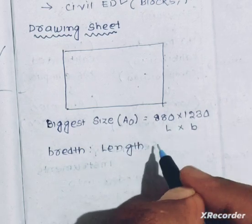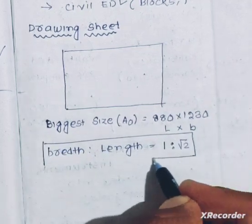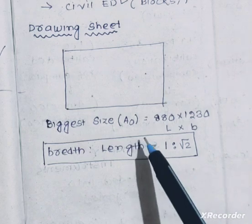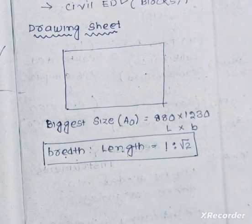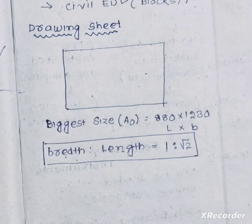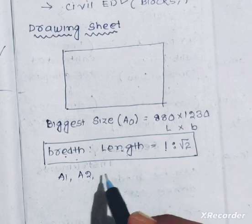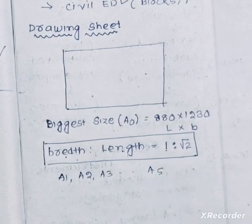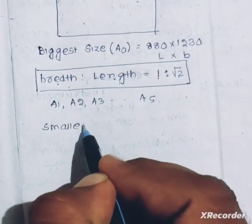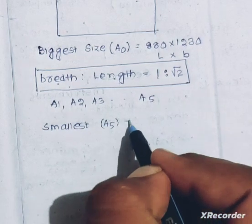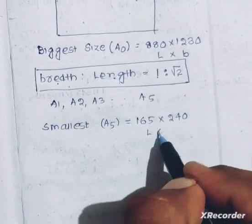The length ratio is very important. What is the ratio? 1 ratio root 2. This is very important — the ratio of the drawing sheet is 1:√2. The sizes go A1, A2, A3, and finally A5. A5 is 165 mm x 240 mm.